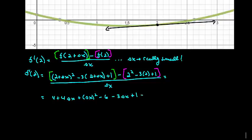So this is going to be 4 + 4Δx + (Δx)² - 6 - 3Δx + 1 minus, now let's just go ahead and compute this. This is 4 - 6, which is -2 + 1, which is -1, so minus 1. Sorry, minus and -1, so plus 1 over Δx.